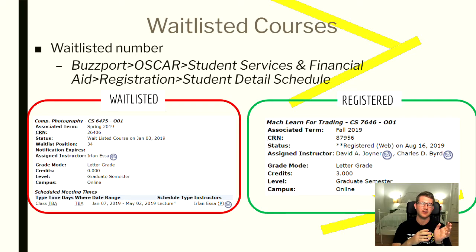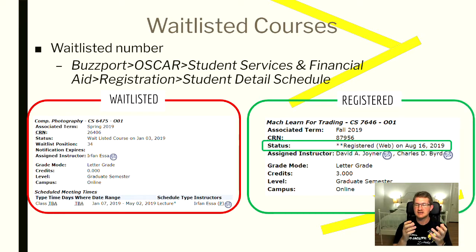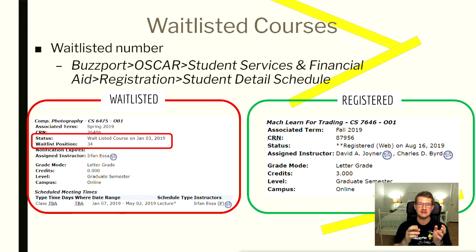Here we can see the difference between being waitlisted for a course and being registered for a course. Some of these snippets come from a previous video I did on waitlisted courses, which I'll link in the video description. As you can see, when you're registered for a course, your status is 'registered,' and for OMSC students it'll be 'registered web.' However, when you are waitlisted for a course, your status is 'waitlisted course' and it gives the date. It also gives you your waitlist position — the number you are on that waitlist. In this class, I was number 34, meaning I was the 34th person to get into the class once space opened up. And for anybody who's followed these videos, I did get into Computational Photography for my first class.